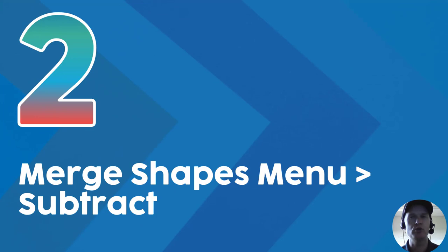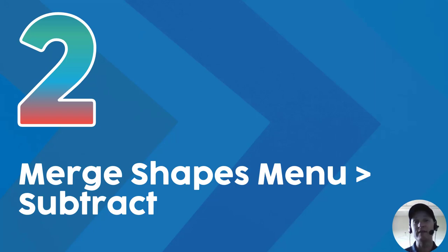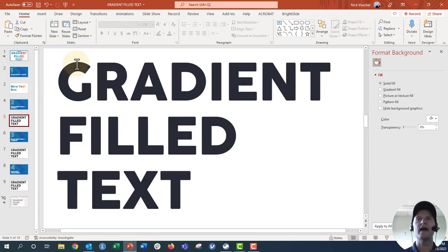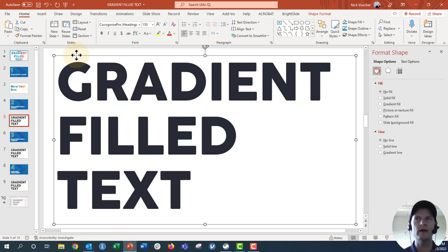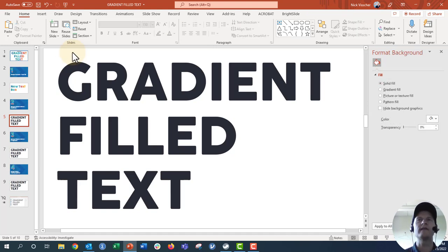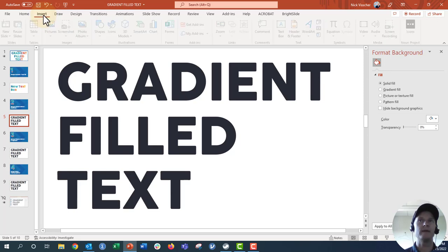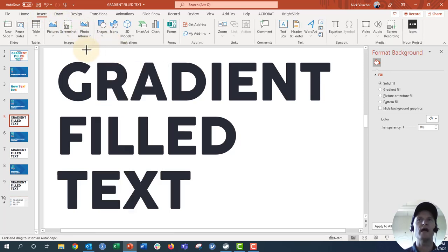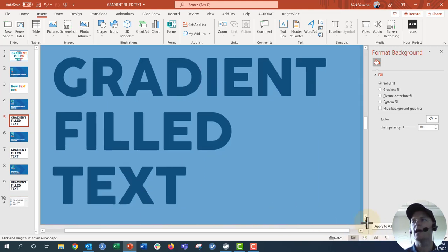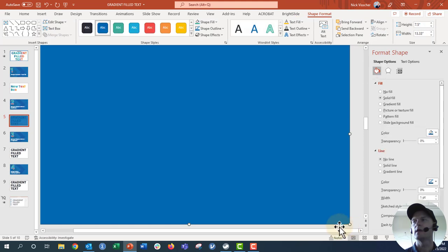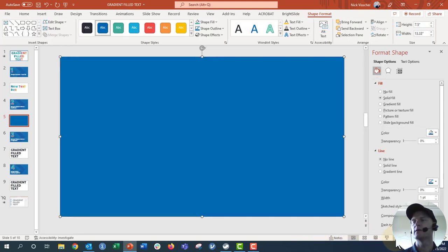All right, now this is way number two to create that beautiful gradient filled text. We're going to use the Merge Shapes menu and specifically use the Subtract feature to create a cookie cutter effect with our text box and another shape we insert over the slide. Let's head over to my demonstration slide. We have our normal text box — black solid filled text — gradient filled text — positioned perfectly at 150 point font. We're going to insert a rectangle and drag it so that it fills the entire height and width of the slide.